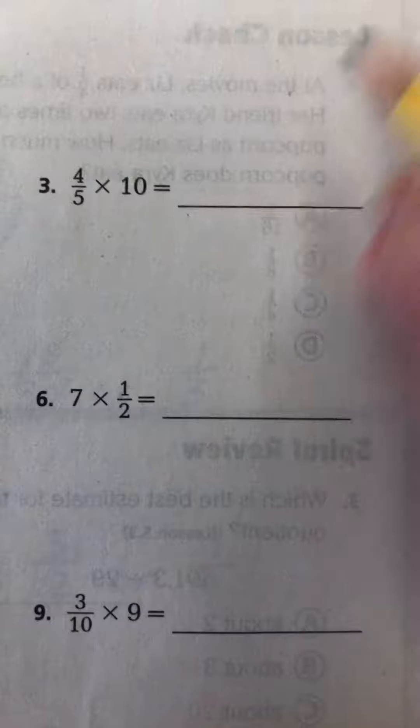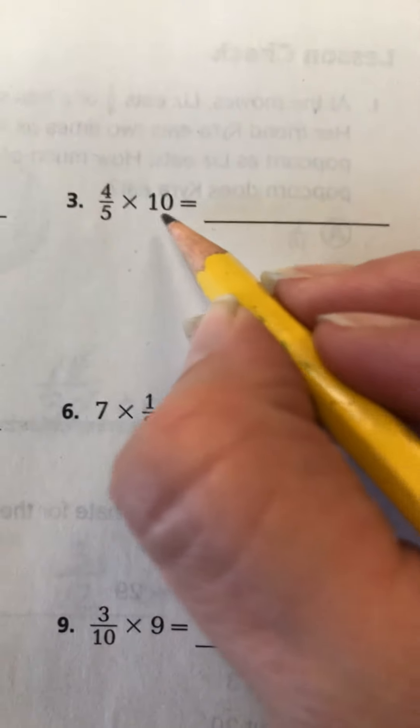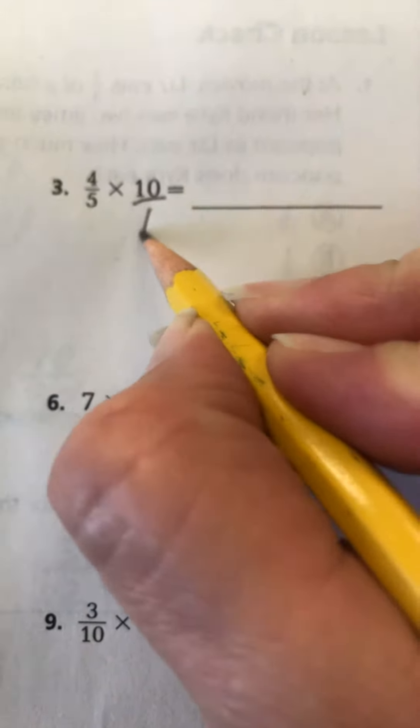Now let's take a look at this one. I want to show you another way. A whole number, every whole number, actually has an invisible denominator of 1.